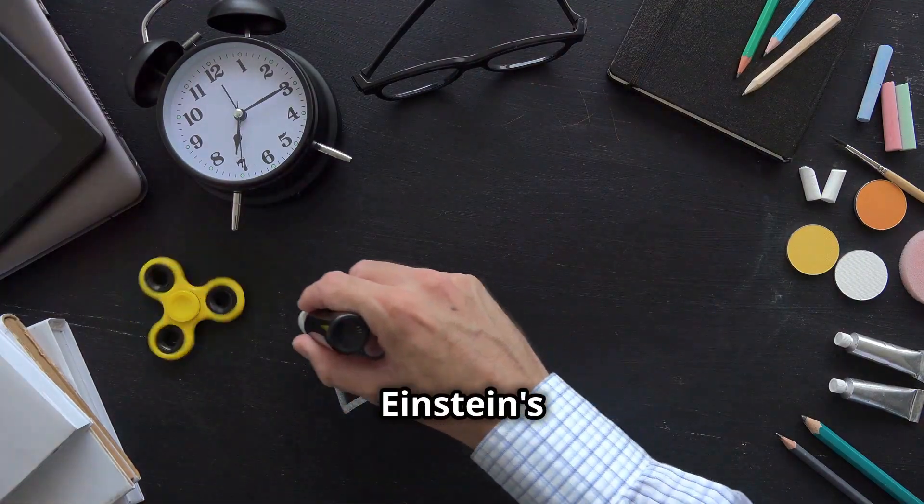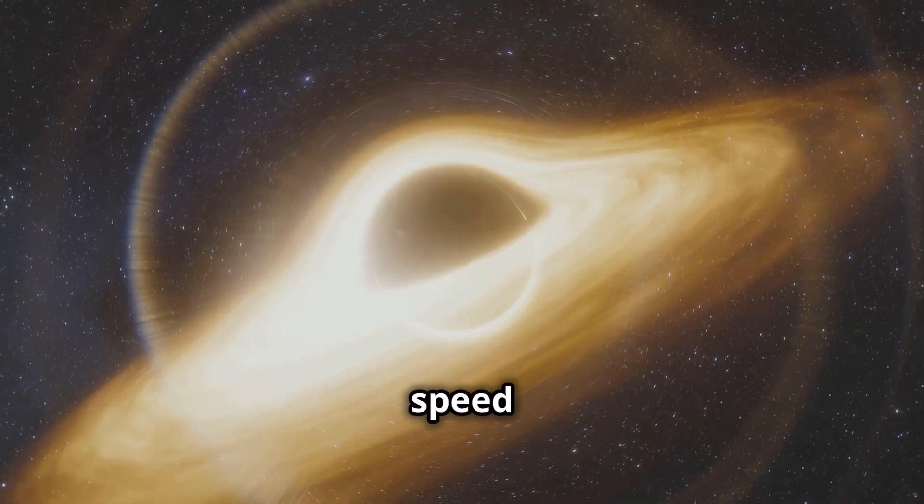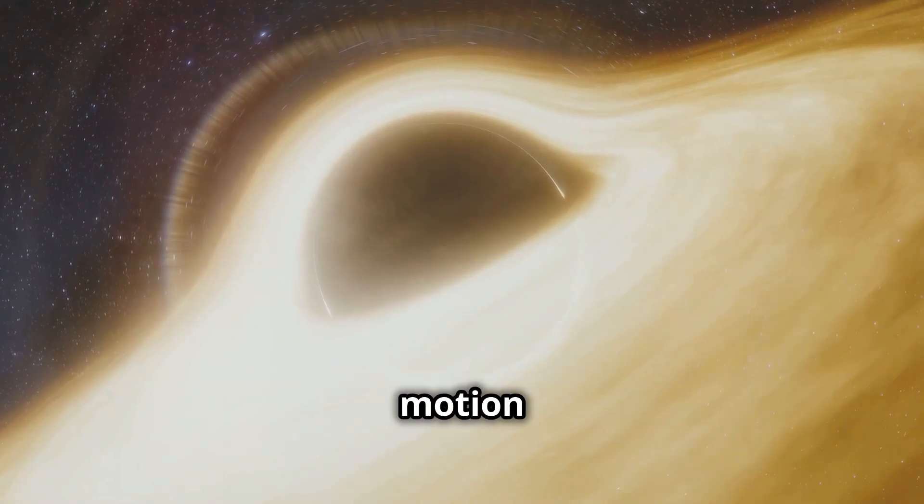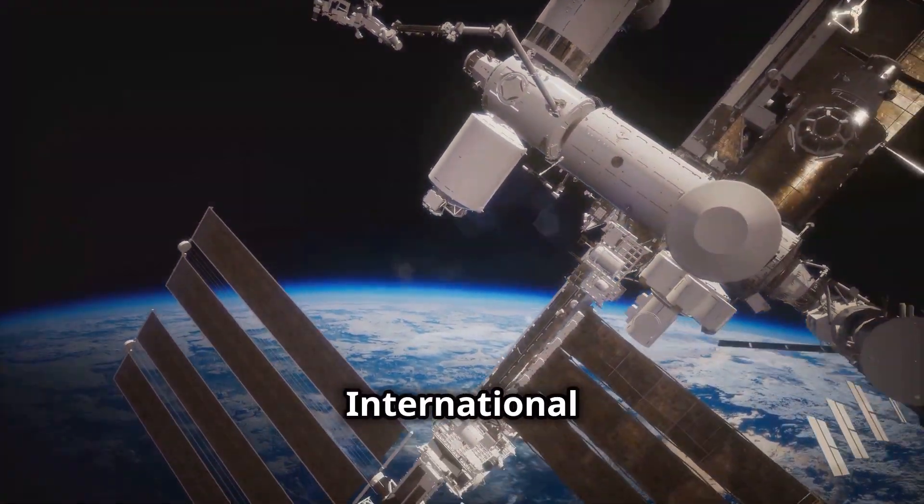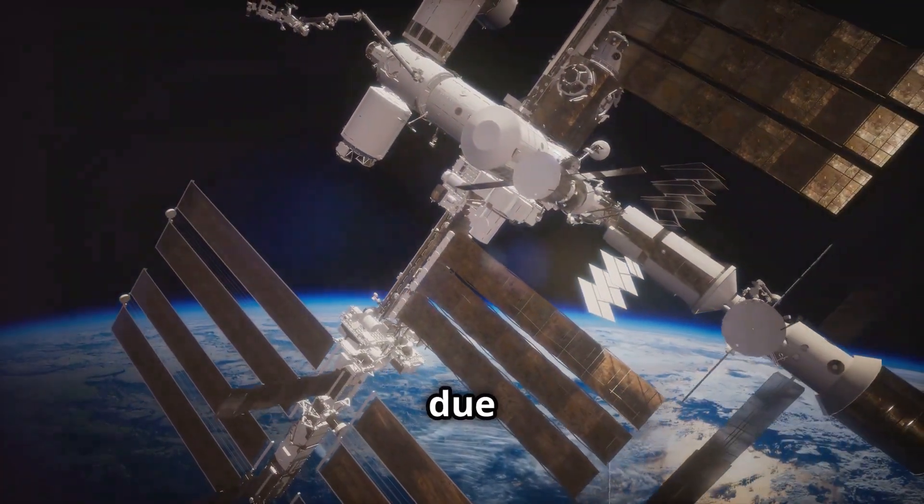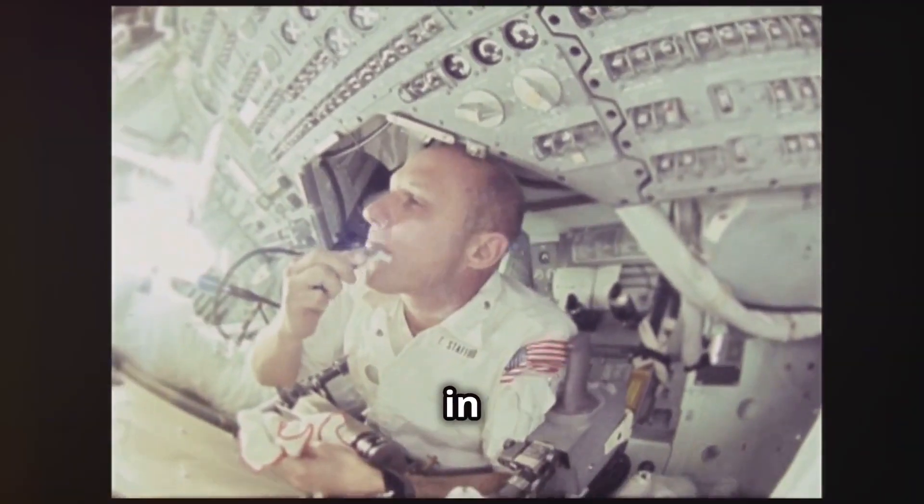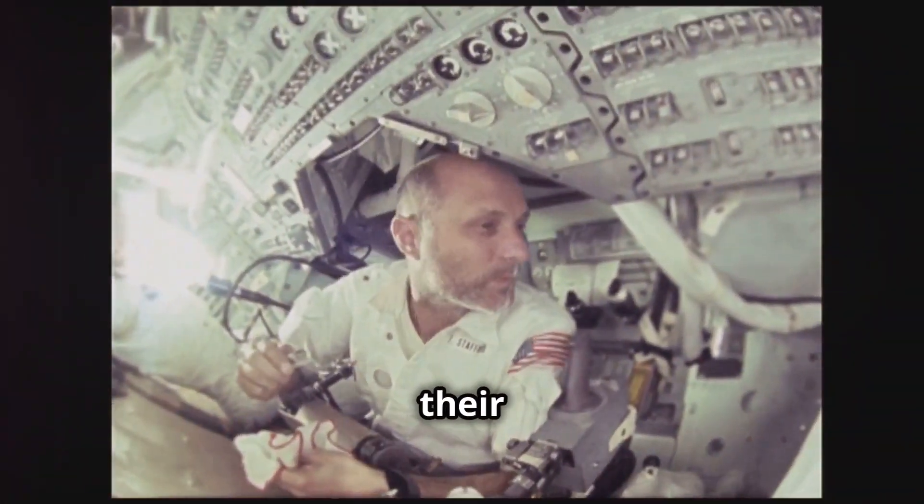According to Einstein's theory of relativity, time isn't a constant and can be affected by speed and gravity. Time dilation is a phenomenon where time moves slower for objects in motion compared to those at rest. For example, astronauts aboard the International Space Station experience time slightly slower than people on Earth due to their high-speed orbit. This means that after spending extended periods in space, they return to Earth, having aged a tiny bit less than their counterparts.